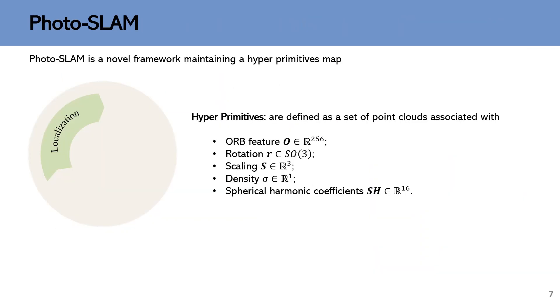PhotoSLAM contains four main components, including localization, geometry mapping, photorealistic mapping, and loop closure components. Each component runs in a parallel thread and jointly maintains a hyper primitives map.